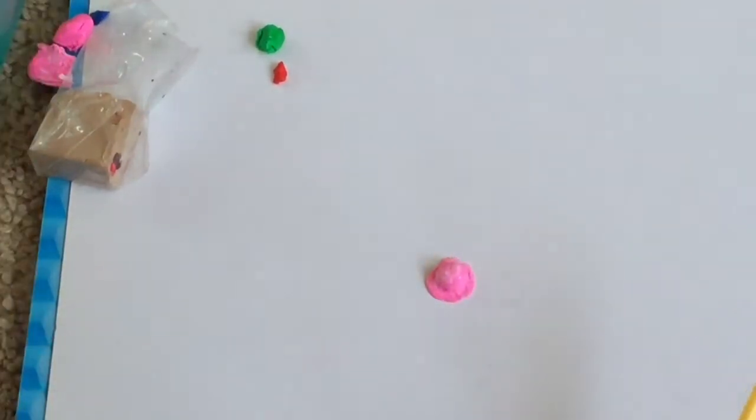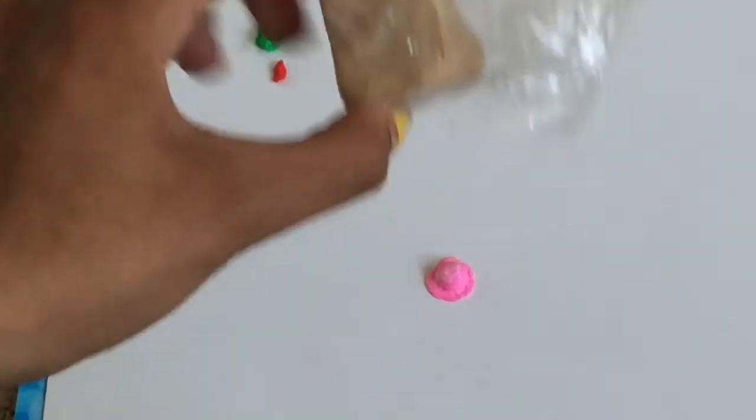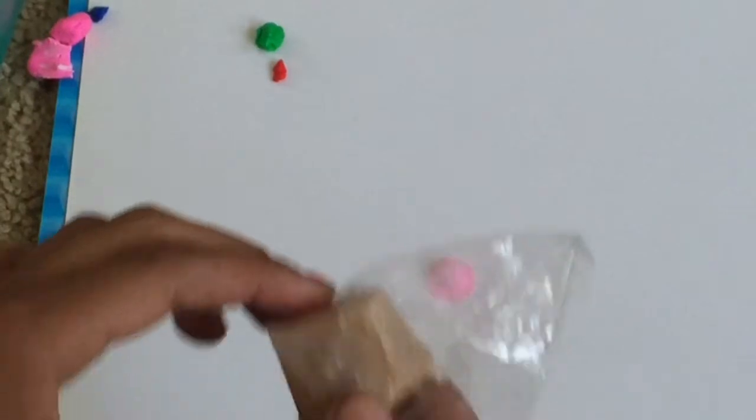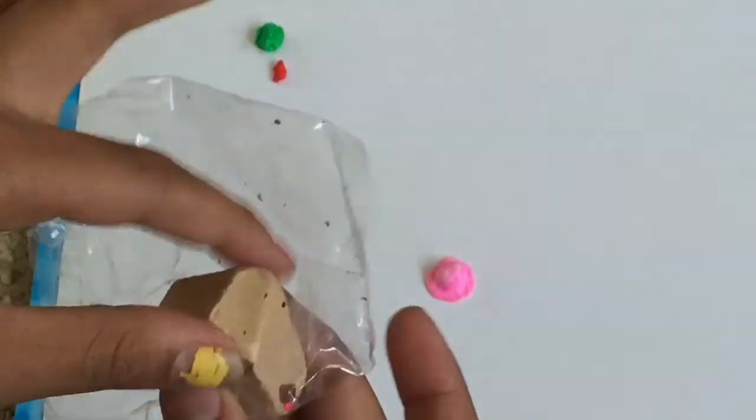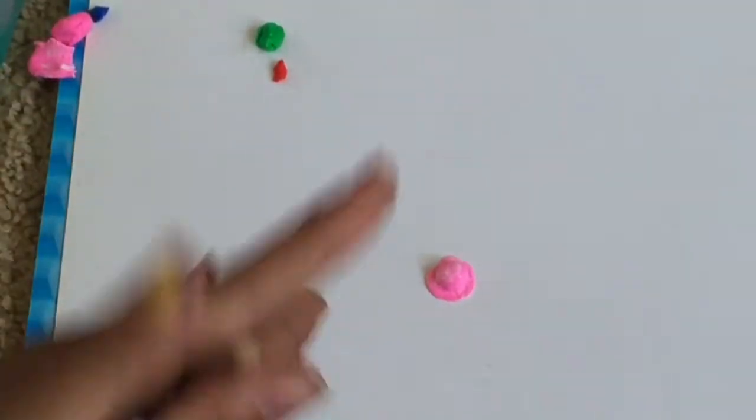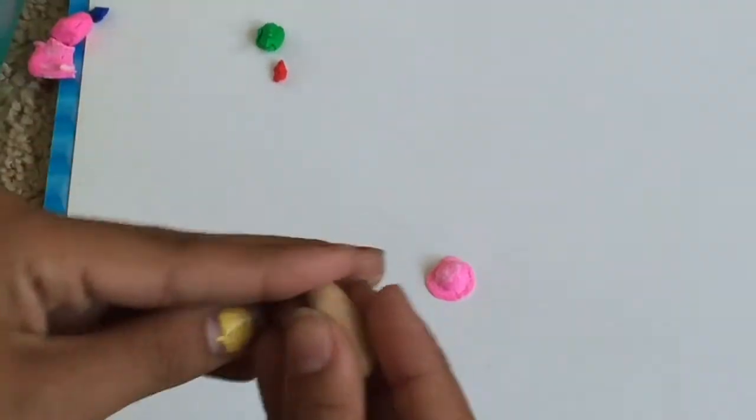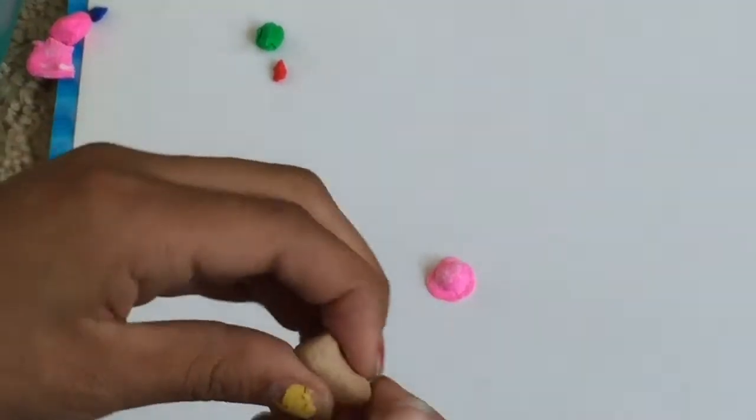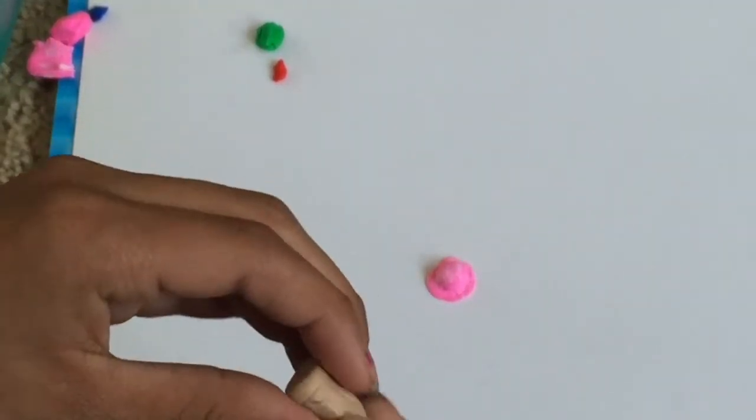So now what you're going to do is grab your skin color or tan, and you're just going to make it into a nice cone that you think is perfect for your ice cream size. Like that. And just keep making it until it looks like a cone.